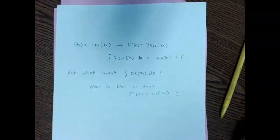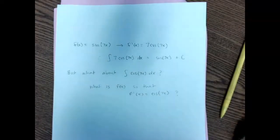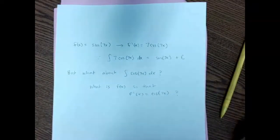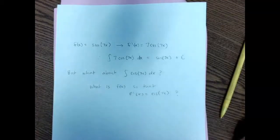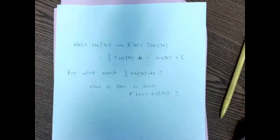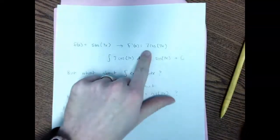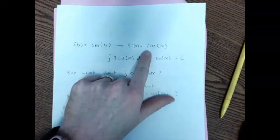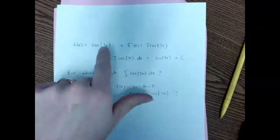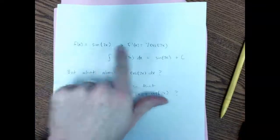Before we get into the notes, I want to do a quick review. Suppose you have some original function sine of 7x — we know we could take the derivative and it would be 7 cosine 7x. That 7 kicks out to the front because of the chain rule. So if that's my original function, I could take the derivative.